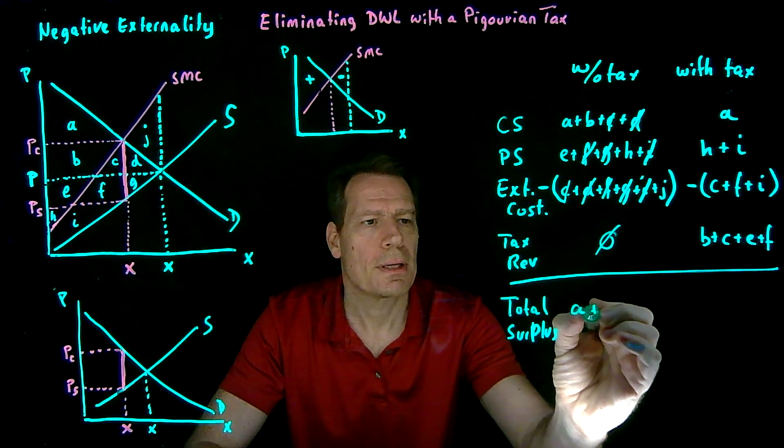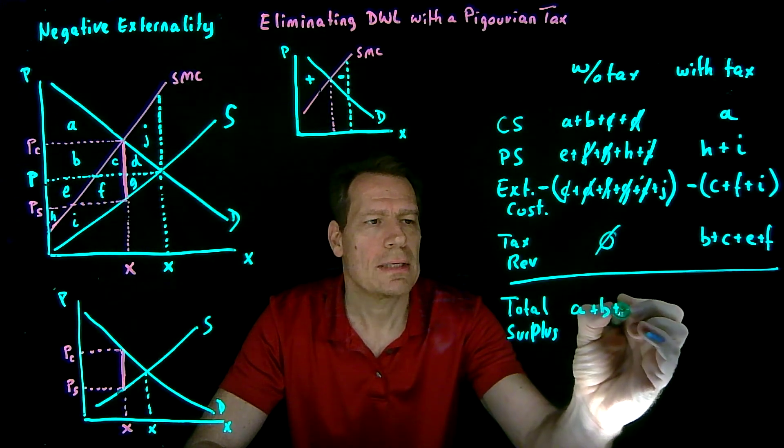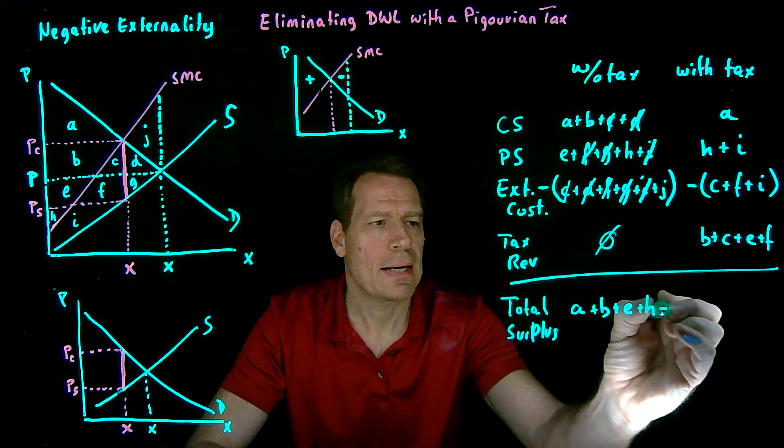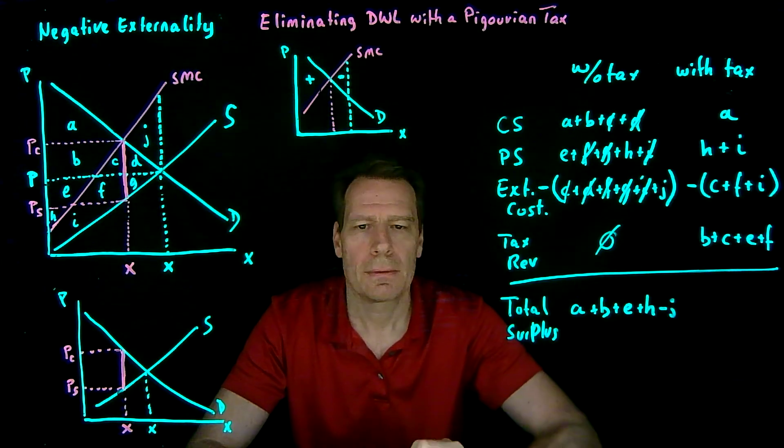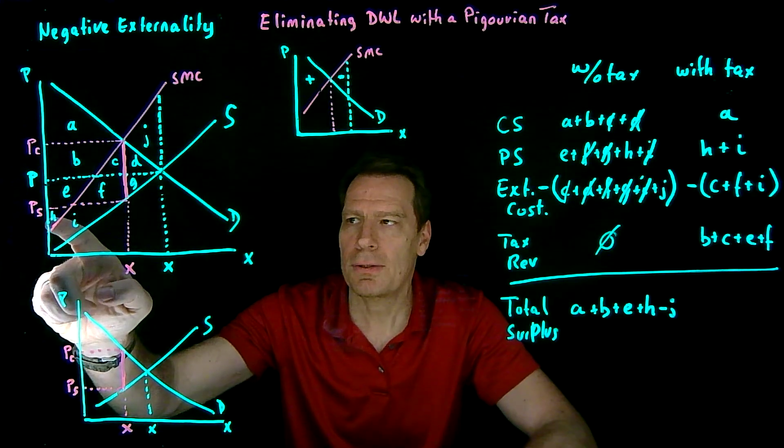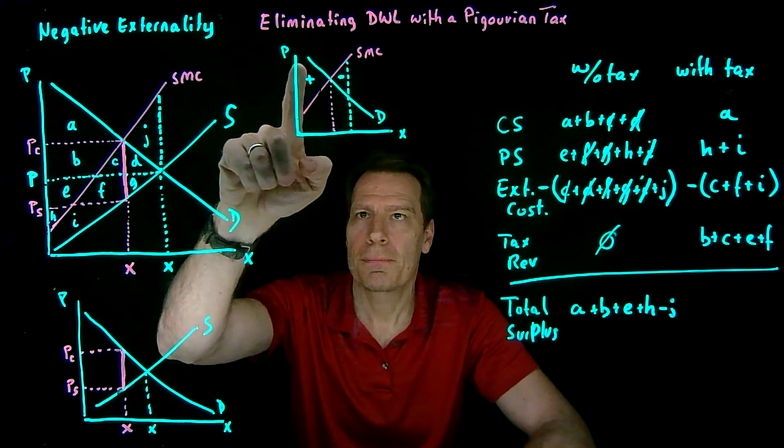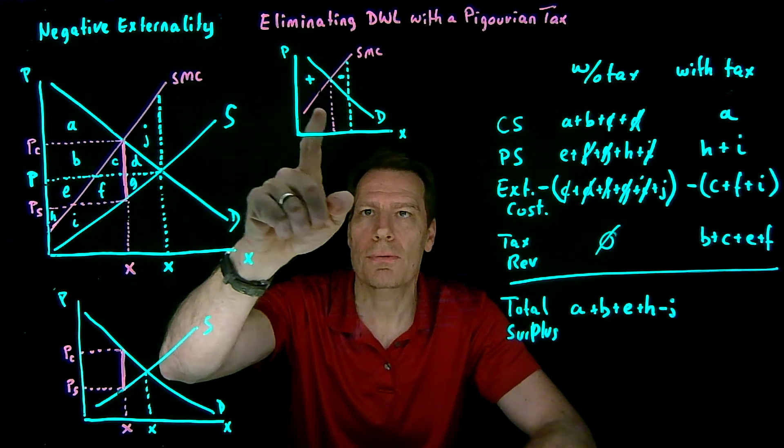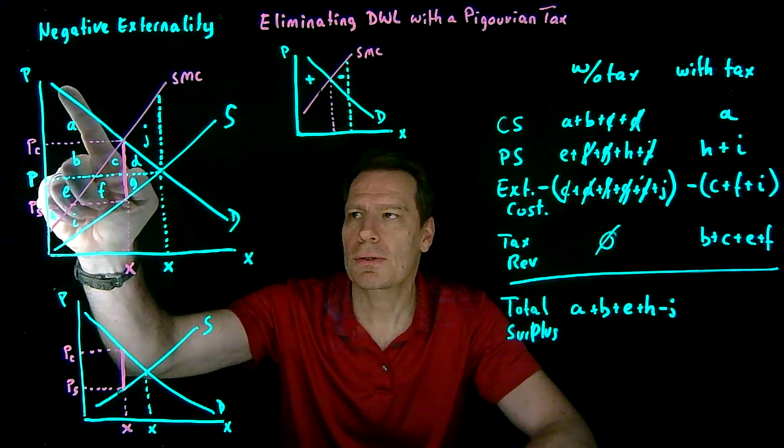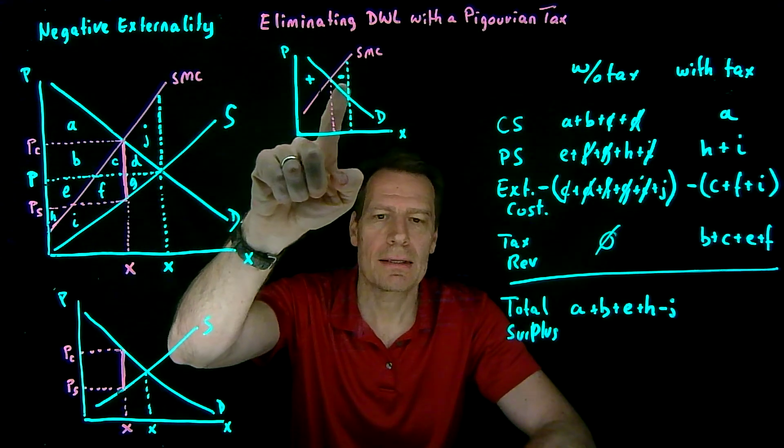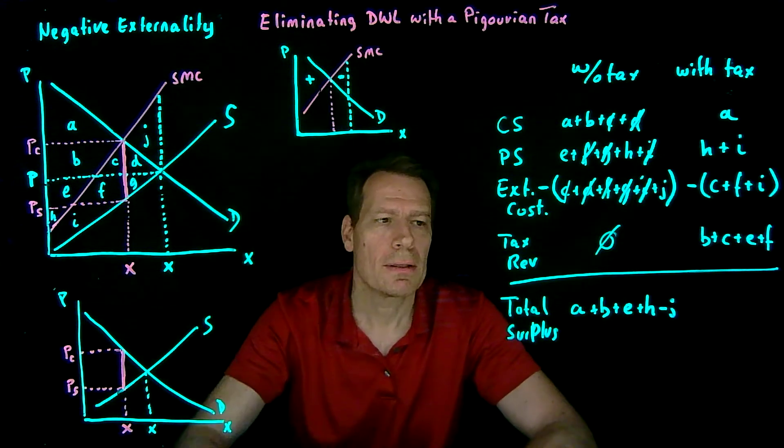What we're left with is A plus B plus E plus H minus J. So that's A plus B plus E plus H. That area between the demand curve and the social marginal cost curve to the left of the intersection, minus J, which is that negative area we have up here, the deadweight loss.